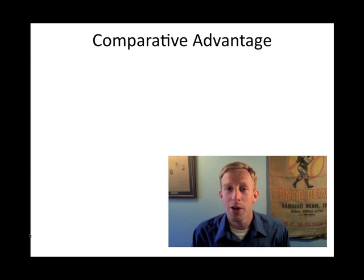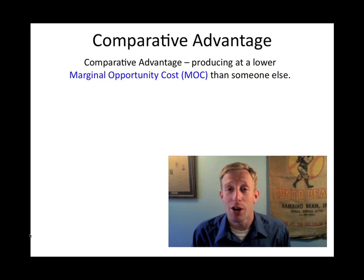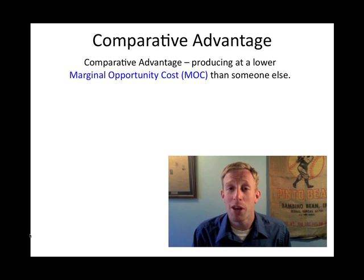A comparative advantage means that you can produce something with a lower marginal opportunity cost. Opportunity cost talks about what you have to give up. And if you have a lower marginal opportunity cost than somebody else, it means that you're giving up less to produce a product. This is one of the most fundamental building blocks of trade.